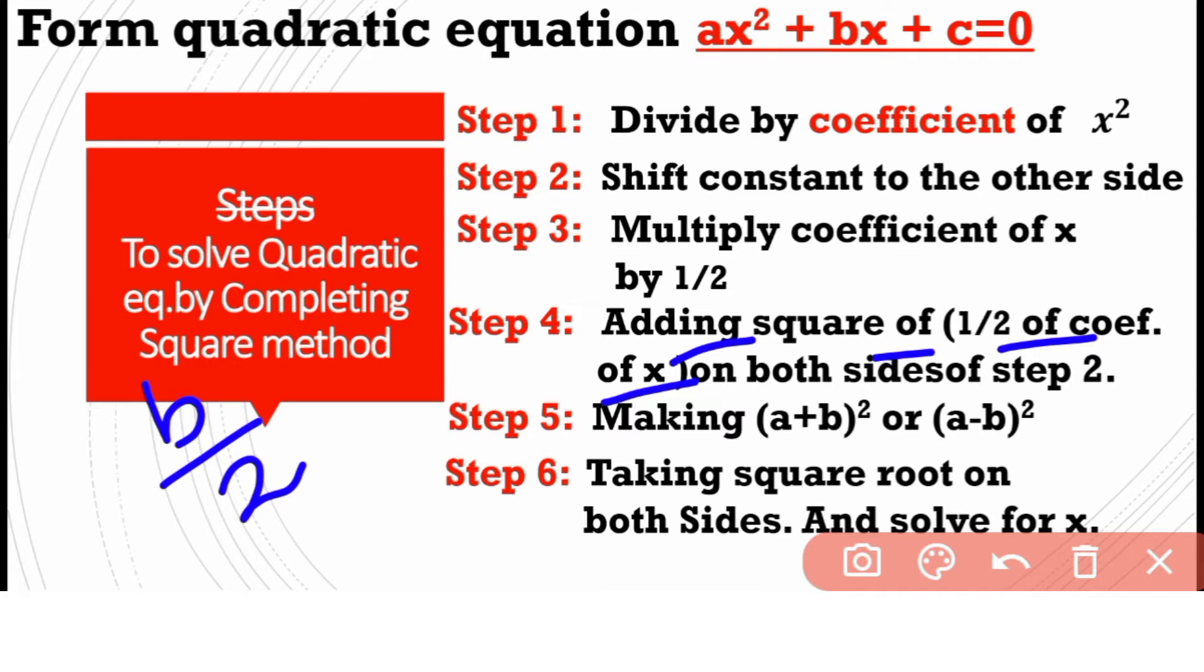Adding square of half of coefficient of x means (b/2)² on both sides of step 2. Step 2 was shift c on the other side.